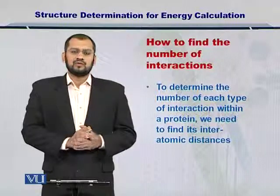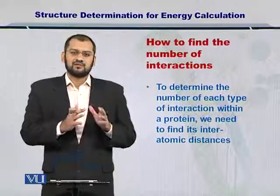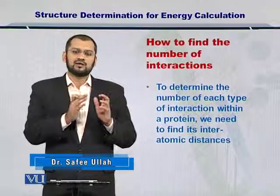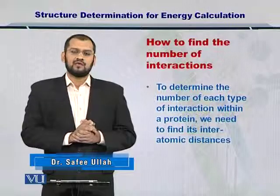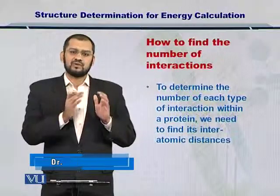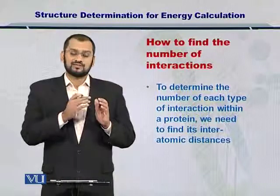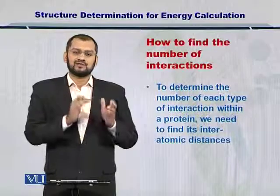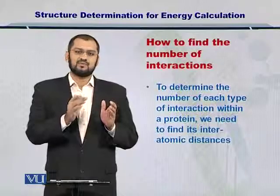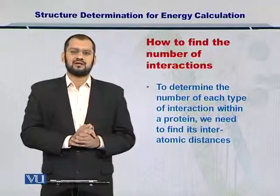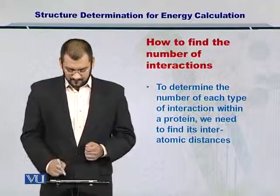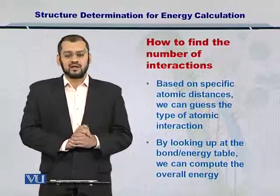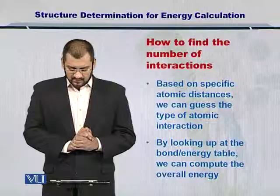In order for you to estimate the type of interaction between atoms, you need to look at the distance between them. So depending on the distance between atoms, you can guess the type of interaction that is taking place. And therefore you can assign an energy value that may have been given out when that interaction happened. So based on the specific atomic distances, we can guess the type of interaction.